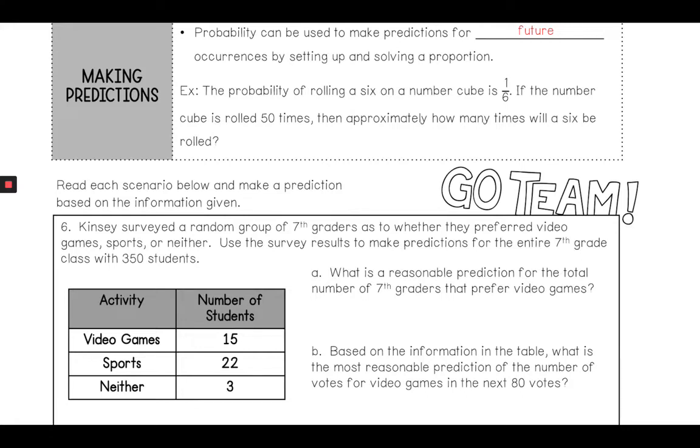In this one, the probability of rolling a six on a number cube is one-sixth. If the number cube is rolled 50 times, then approximately how many times will the six be rolled? You just take the probability and multiply it by the number of times, then set up a cross product, and it would tell you that you have eight and one-third or about eight times. We've already done cross products, so you should be familiar with that step.